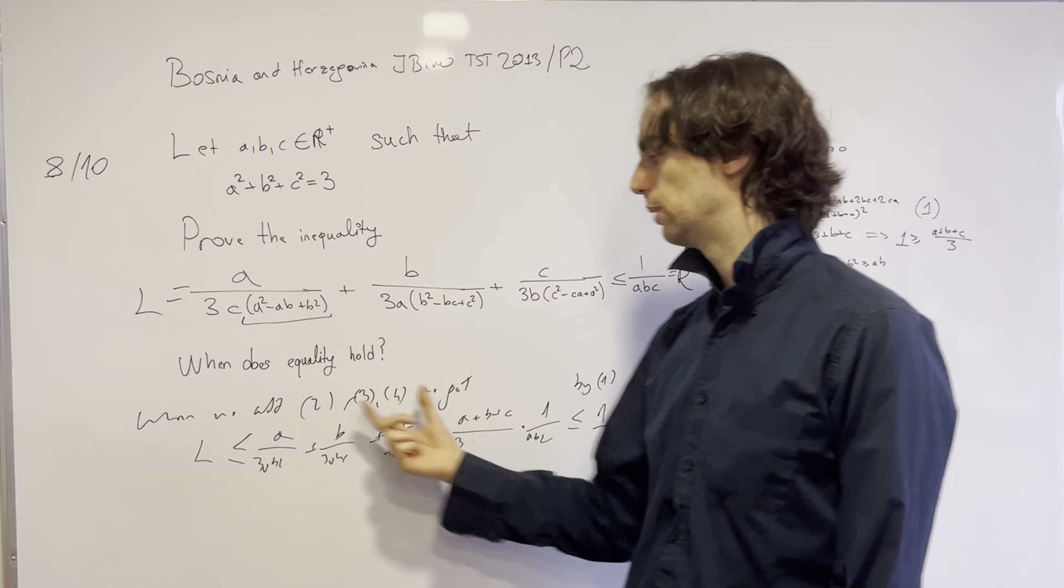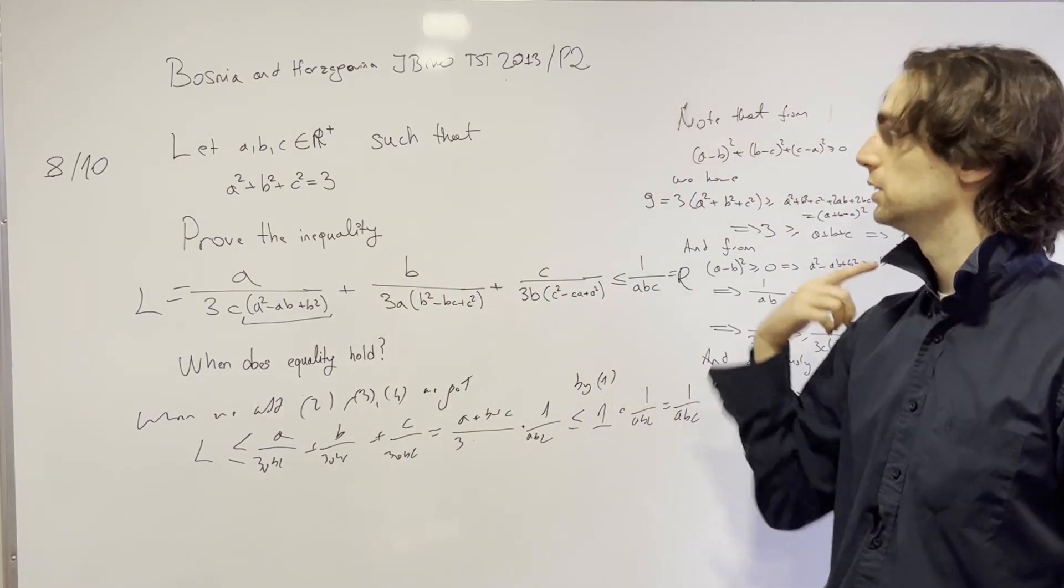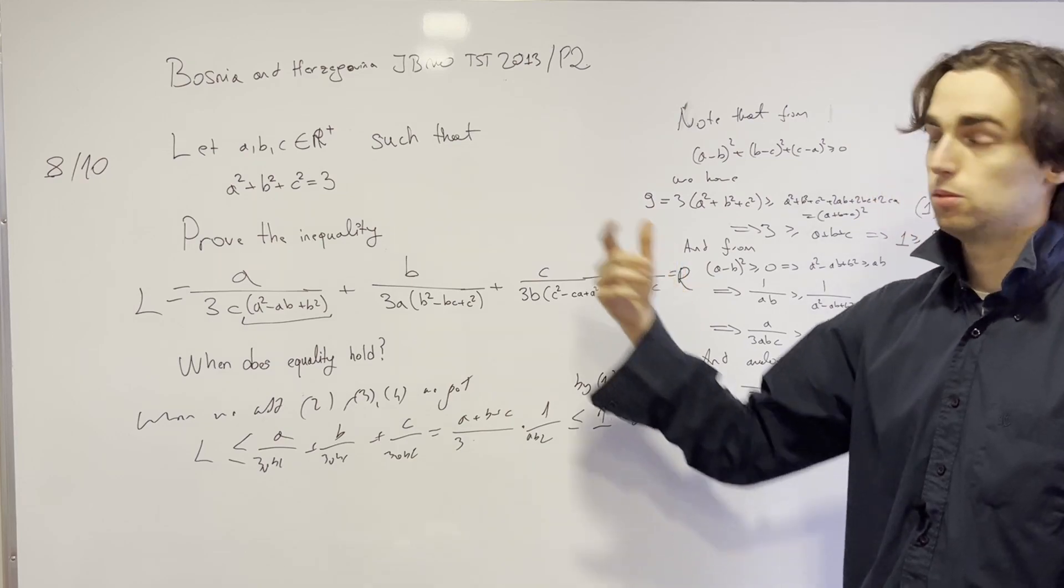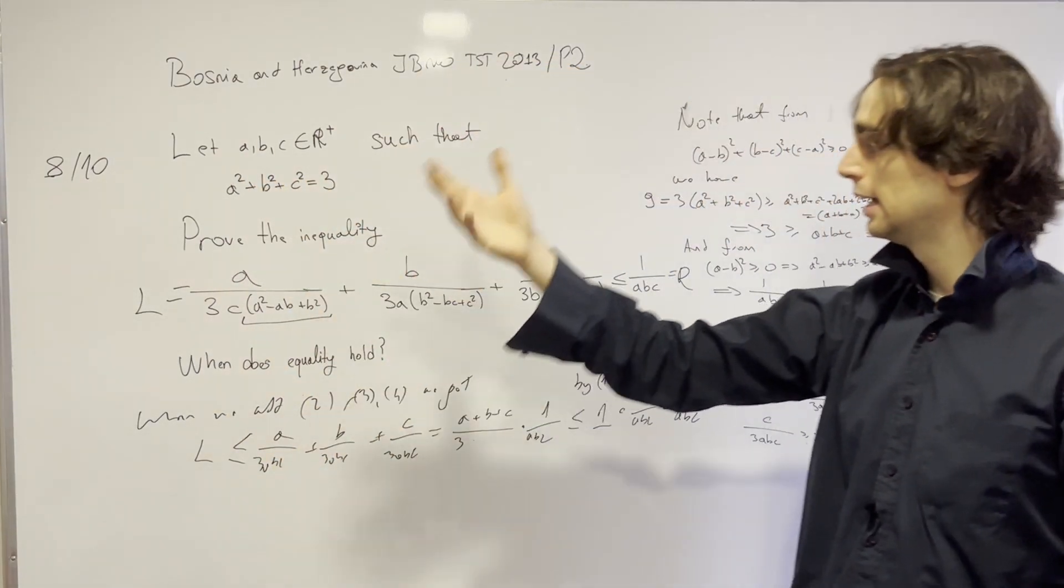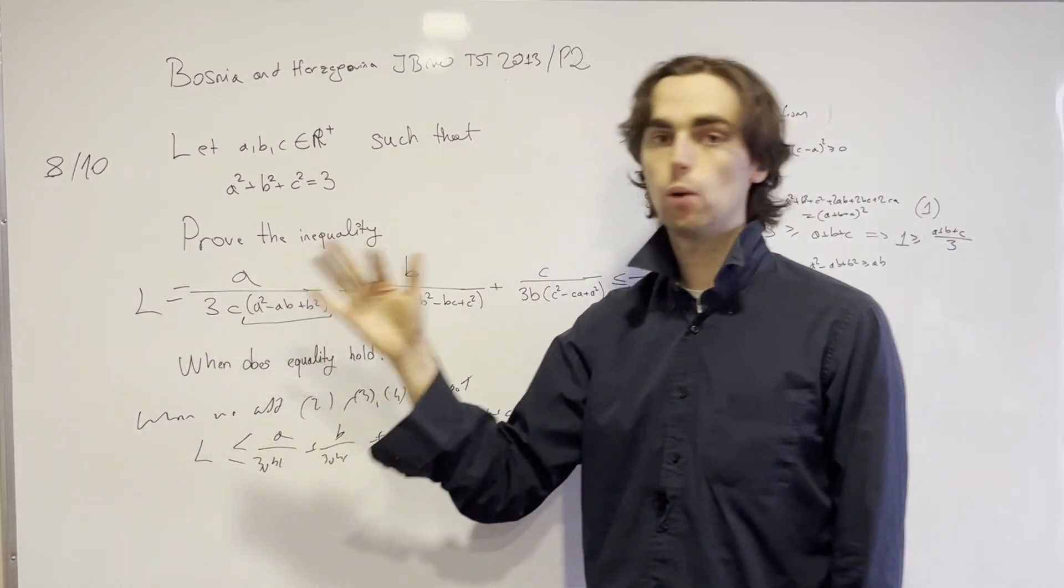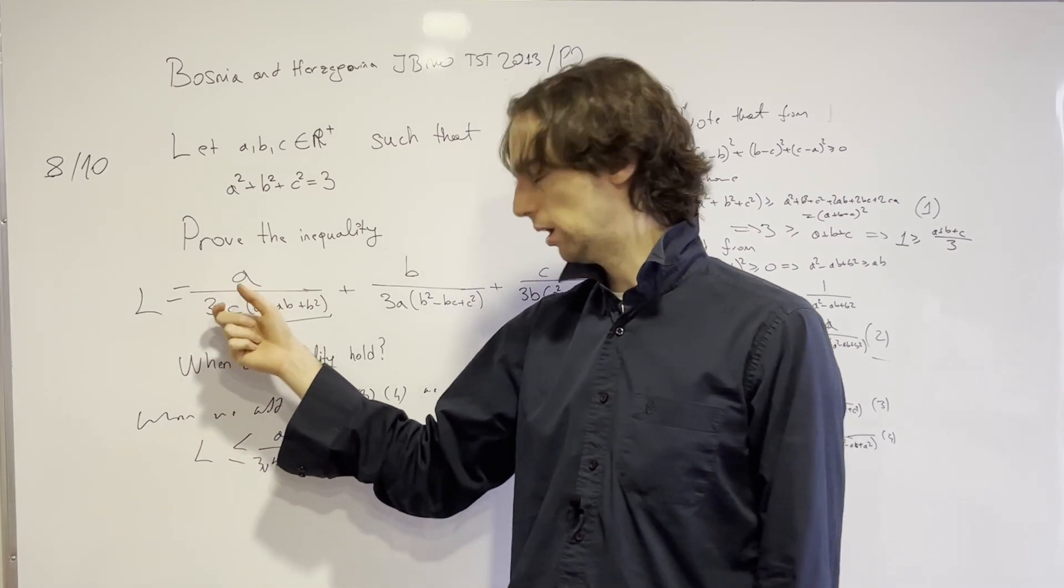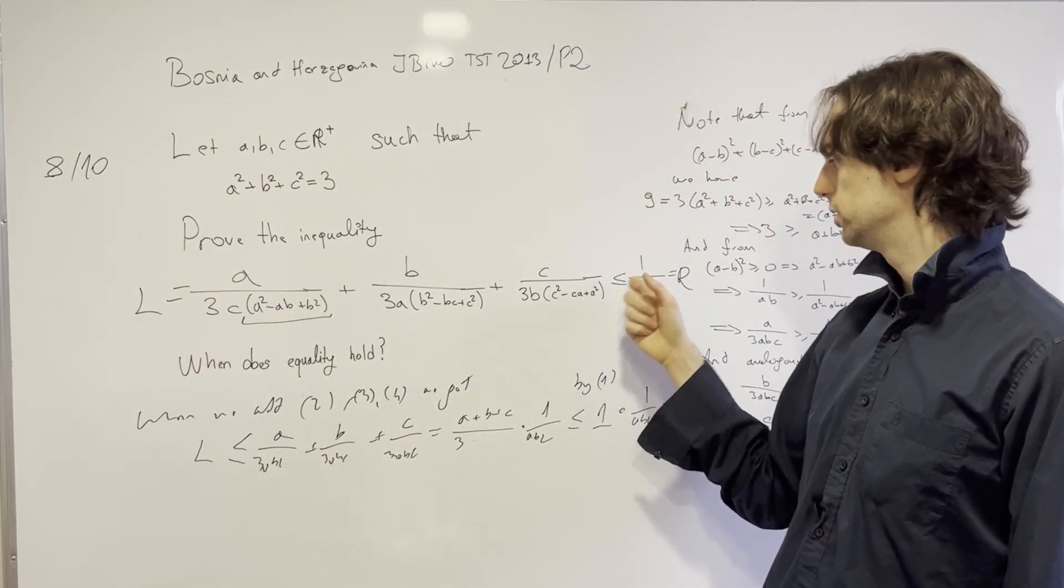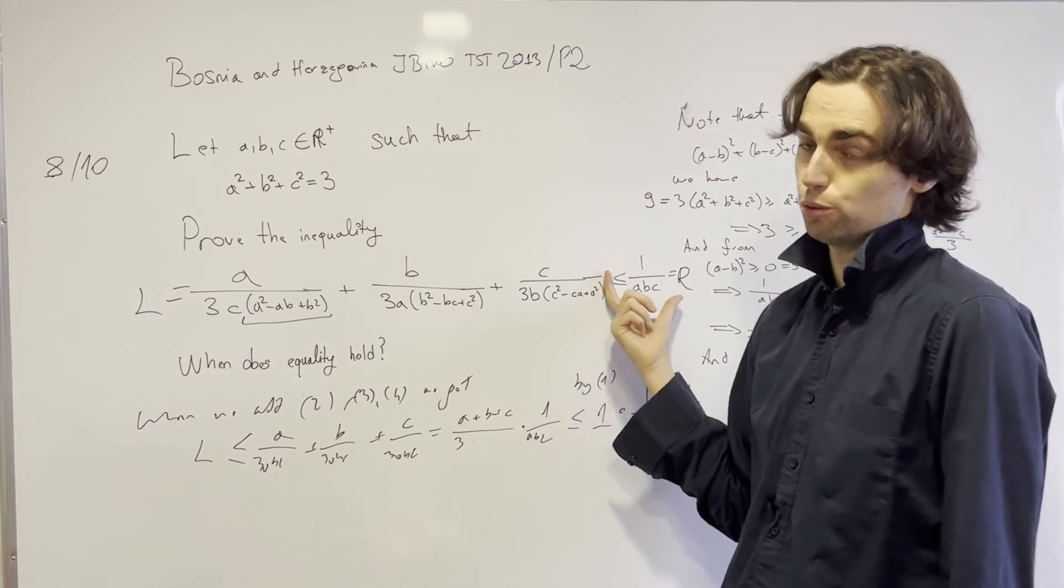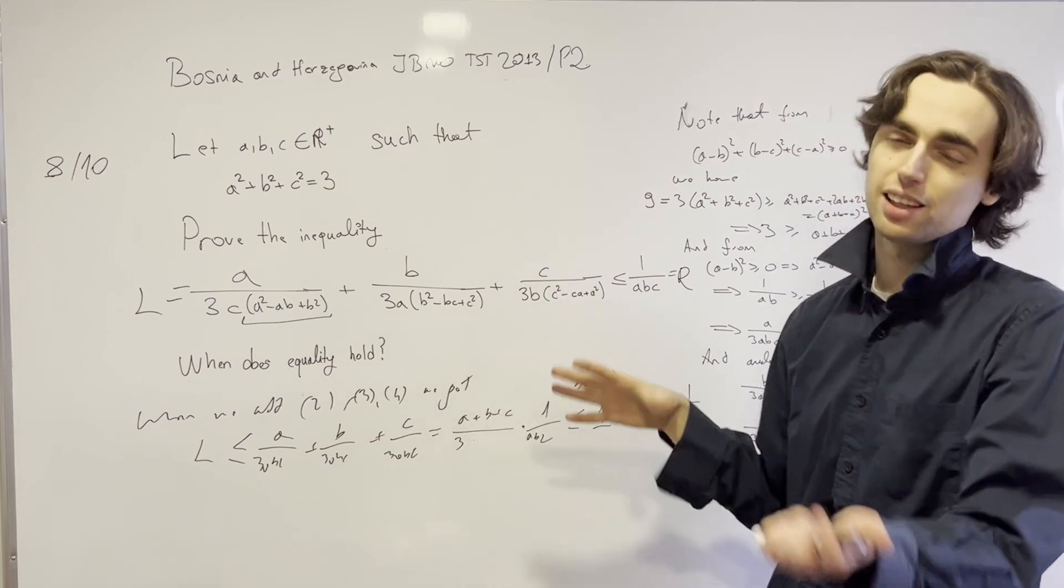And so we see that we can have equality only if a=b=c. The condition makes it so that they must be then equal to 1. And we also need to then check, well, when they are equal to 1, 1, 1, we get 1/3, 1/3, 1/3 is less than or equal to 1, which is an equality. So that's just a thing to keep in mind.